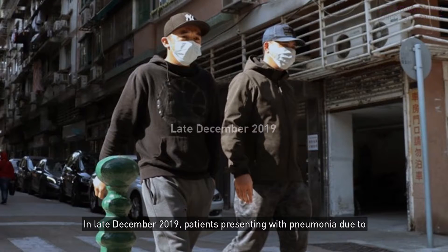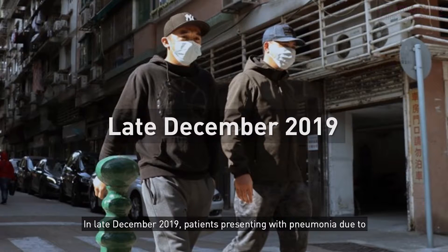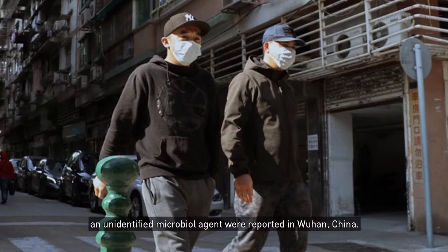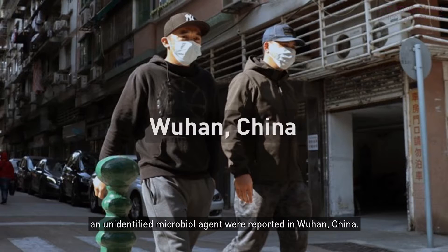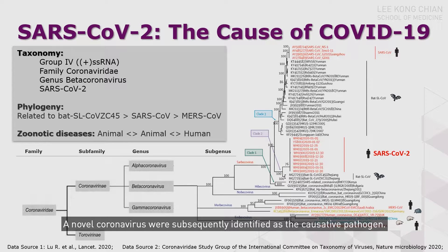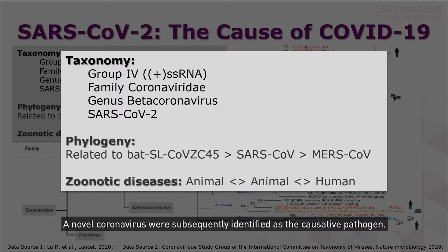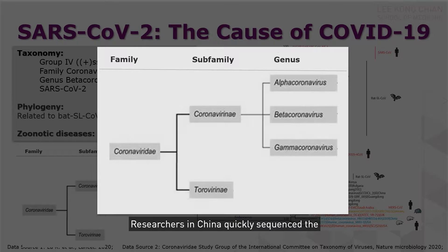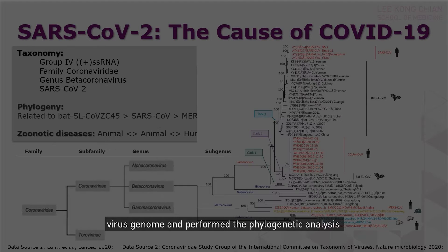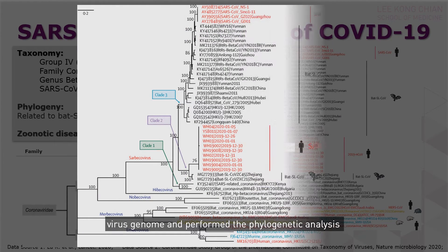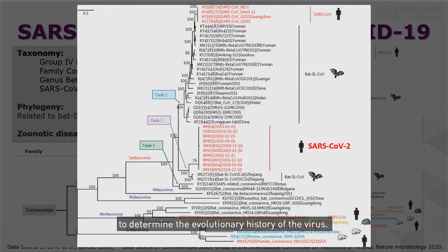In late December 2019, patients presenting with pneumonia due to an unidentified microbial agent were reported in Wuhan, China. A novel coronavirus was subsequently identified as the causative pathogen. Researchers in China quickly sequenced the virus genome and performed phylogenetic analysis to determine the evolutionary history of the virus.